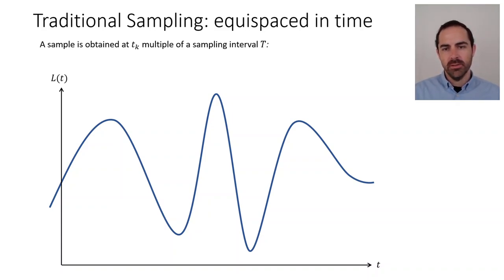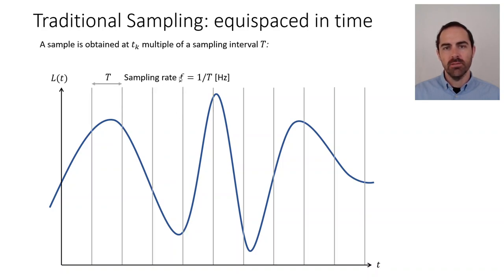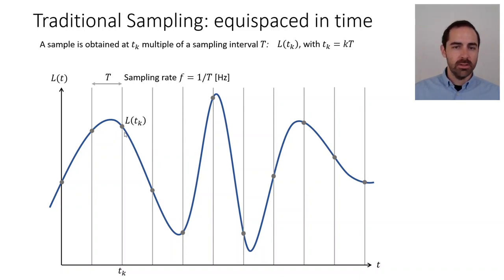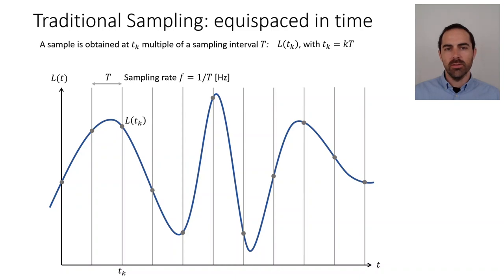From a sampling viewpoint, traditional sampling is how frame-based cameras work — they take samples at a constant rate. There is a sampling rate F given by the inverse of some sampling interval T. A sample is acquired at each of these sampling times, which are multiples of some interval T — so these are the samples L at time T_k. This is how usual video cameras and audio recorders work: they take several samples per second — in the case of video, 25 samples per second; in the case of audio, it could be thousands of samples per second.